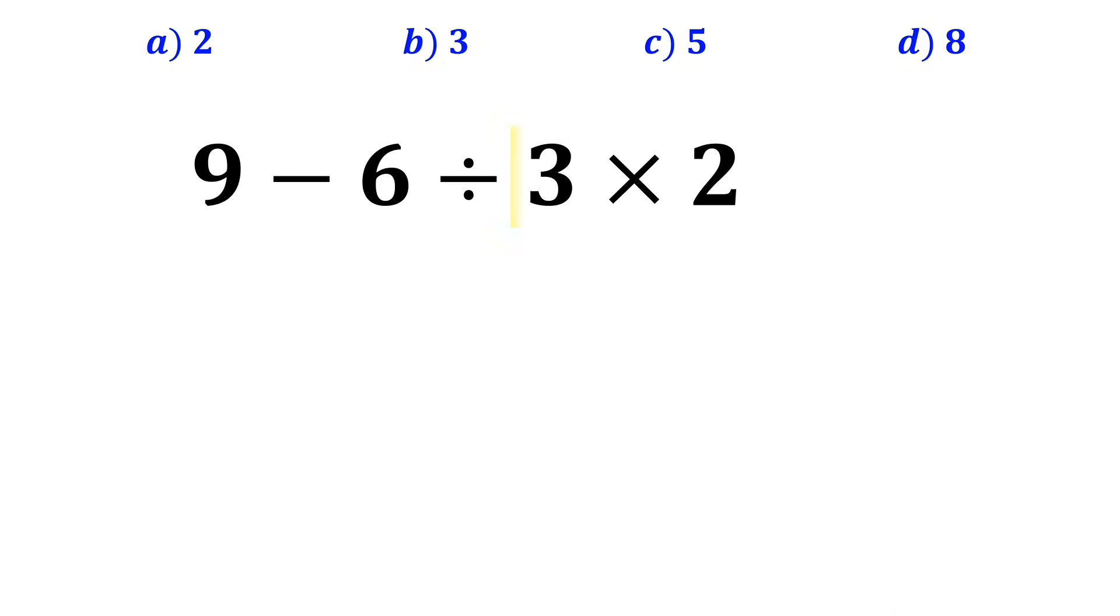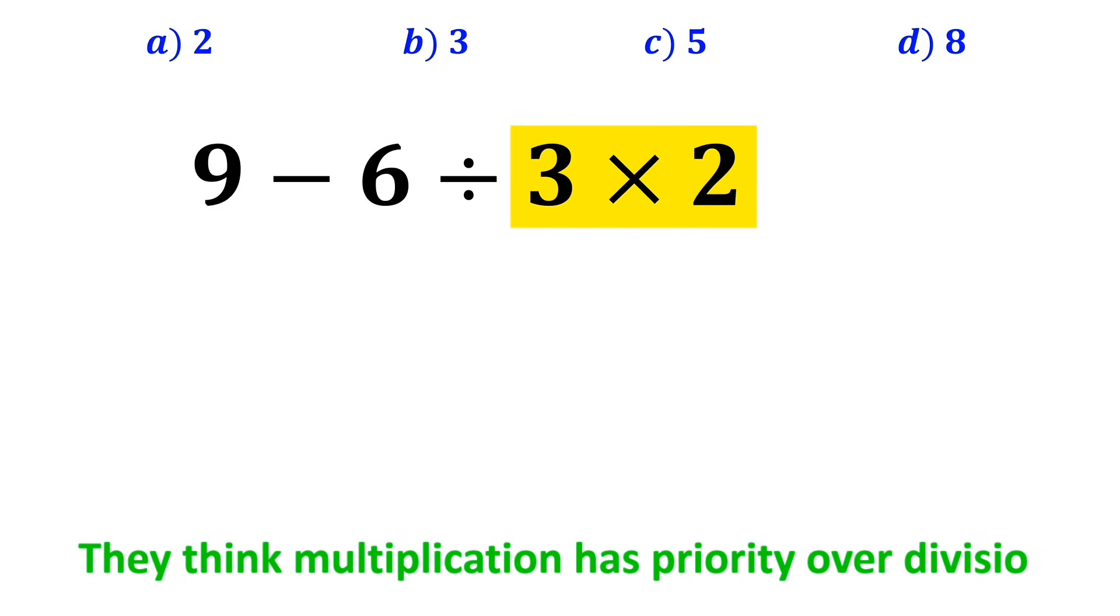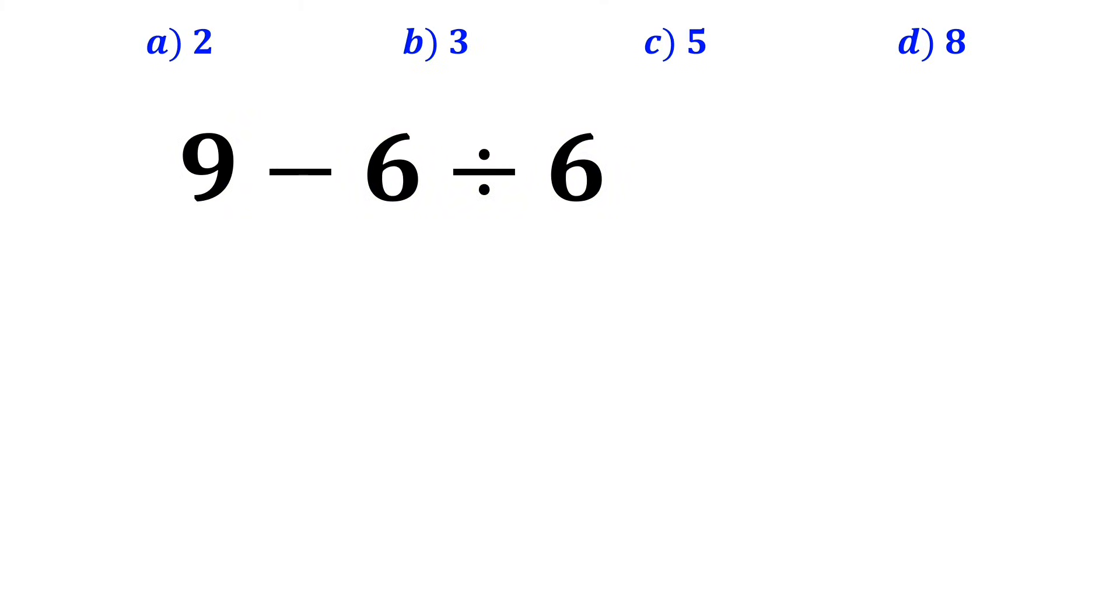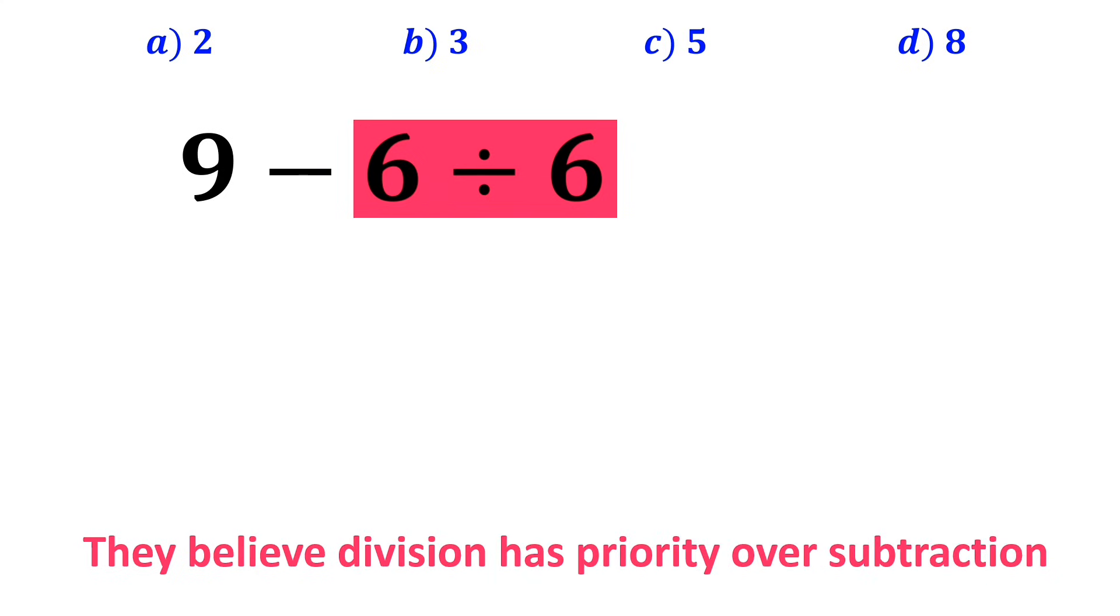In the next step, they usually go for the multiplication between 3 and 2, because they think multiplication has priority over division. So they rewrite the expression as 9 minus 6 divided by 6. Then they perform the division between the two 6's, since they believe division has priority over subtraction. And rewrite this expression as 9 minus 1.